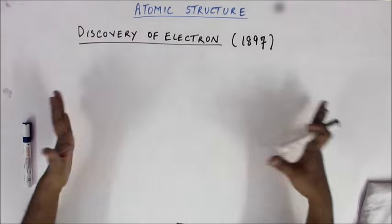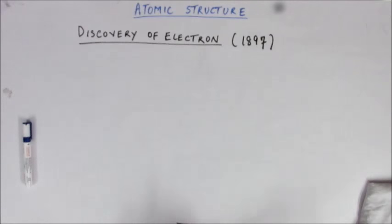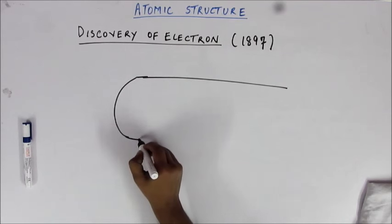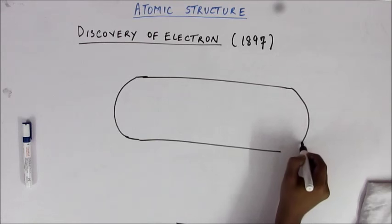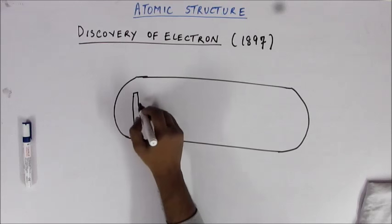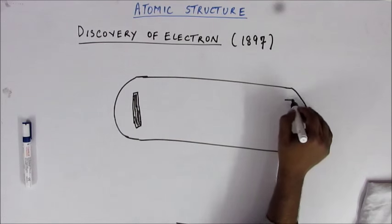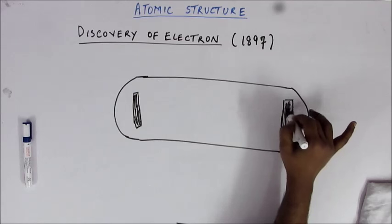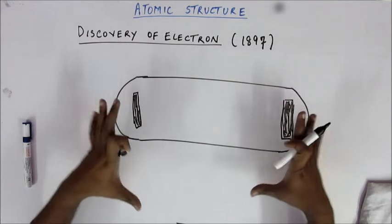There exist more particles inside the atom that constitute it, and they are the fundamental particles. I'm going to show you the experimental setup which J.G. Thomson used to get his result. His experimental setup was quite simple — he had a glass chamber like this.